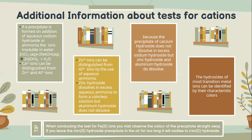The hydroxides of most transition metal ions can be identified by their characteristic color. Tip: when conducting the test for Fe2+ ions, you must observe the color of the precipitate straight away. If you leave the iron 2 hydroxide precipitate in the air for too long, it will oxidize to iron 3 hydroxide.